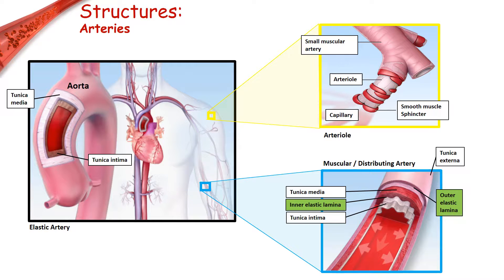There are three main classes of arteries that move red blood cells around the body. First, elastic arteries, the largest type, are found close to the heart and help push blood into the muscular arteries, which are medium-sized distributing arteries that are less elastic in tissue. The last and smallest arteries are the arterioles, which have fewer than six smooth muscle layers in their tunica media, still enough to control flow into the capillary beds.